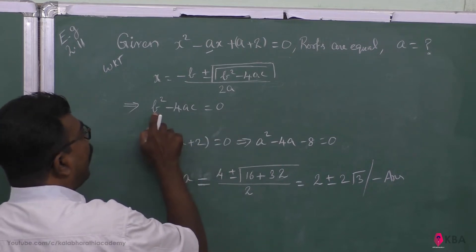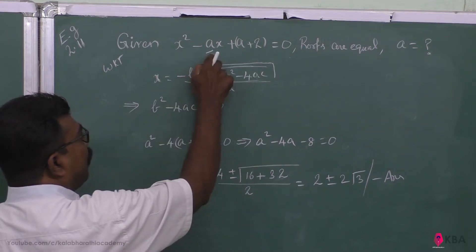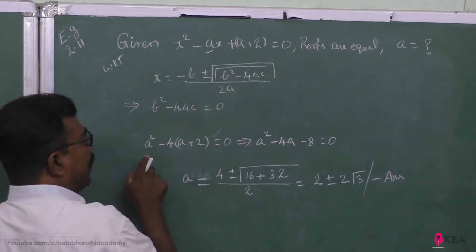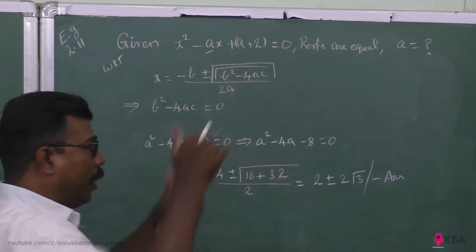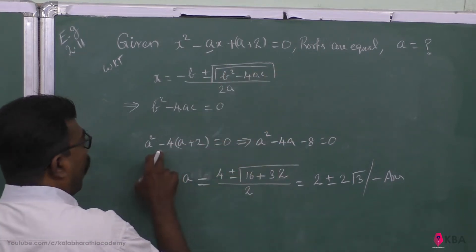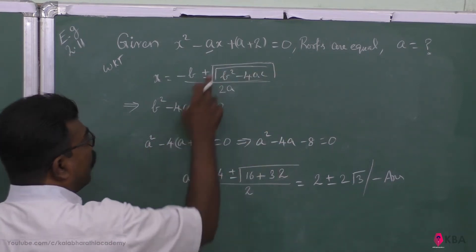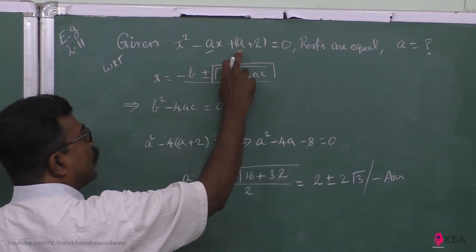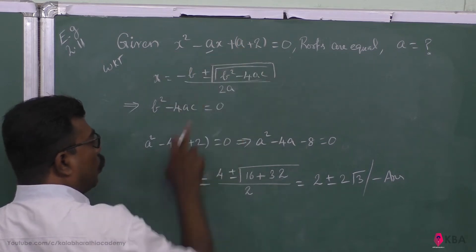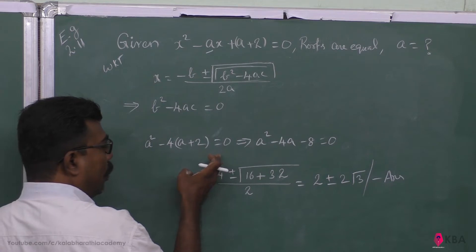So b நம்முடை equation-ல என்னன்னா, b என்பது -a, so this is a square: (-a)² = a². Minus 4ac: 4 into a = 1, c = a + 2. So a² - 4(1)(a + 2) = 0, meaning a² - 4(a + 2) = 0.